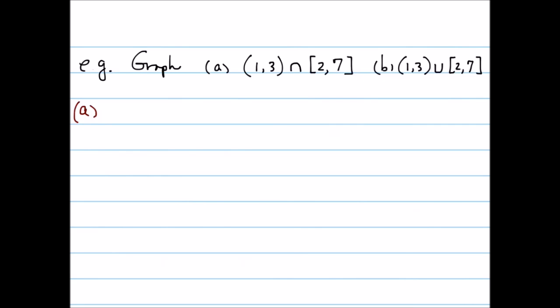For the first interval from 1 to 3, let's label 1 and 3 first. And then because it's open bracket, it's going to be open circle on both end points. And the set is everything in between.